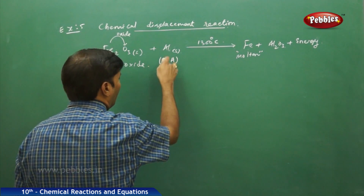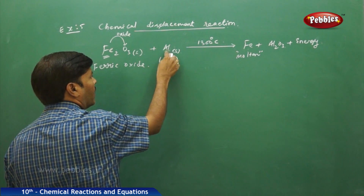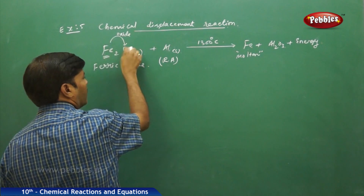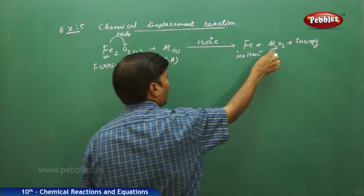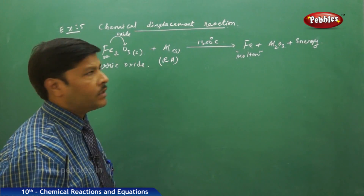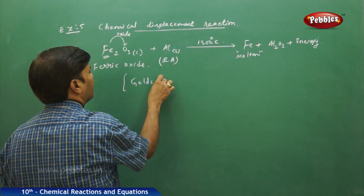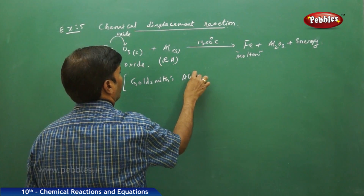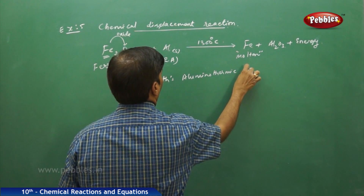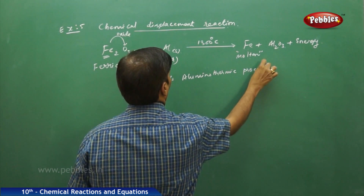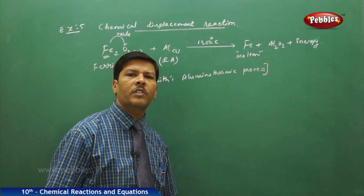Because aluminum is a reducing agent, all reducing agents get oxidized. That is why aluminum is reducing the oxide of iron to the molten metal of iron, and by itself it is getting oxidized to aluminum oxide. This whole reaction is otherwise also called Goldsmith's Aluminothermic Process.